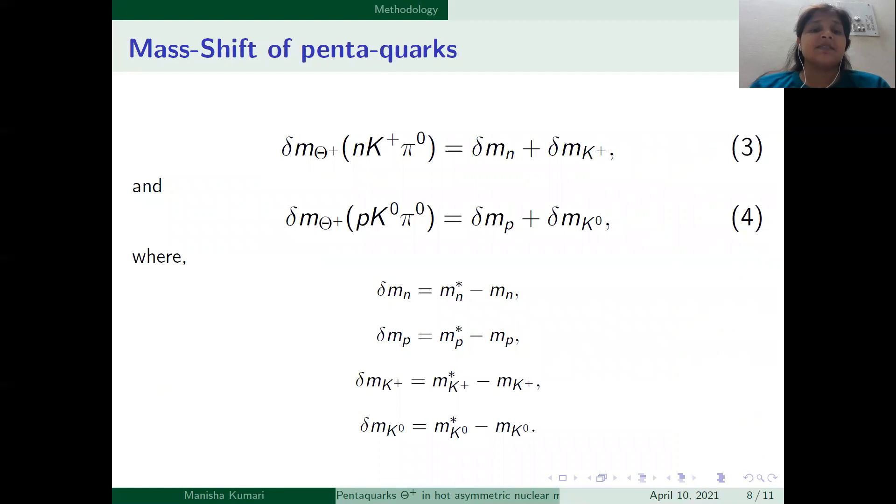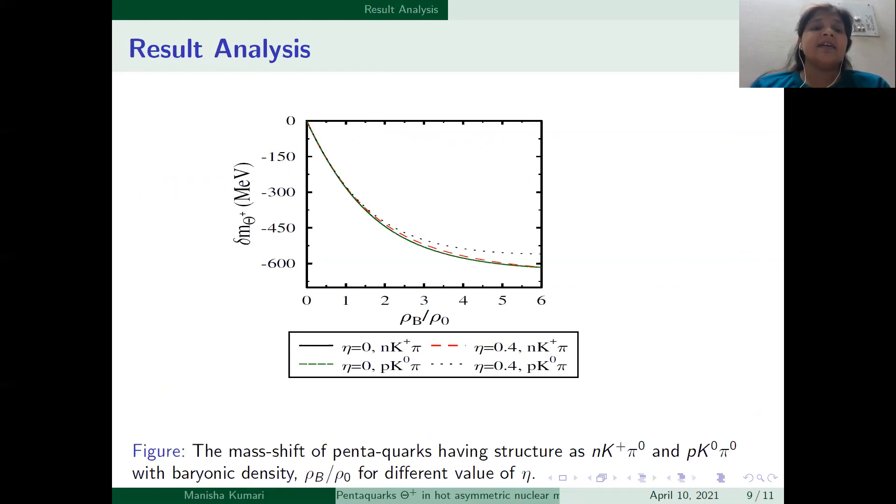Mass shift is defined by these relations. In the result section, we present the mass shift of pentaquarks having structure nK plus pi zero and pK0 pi zero with baryonic density for different values of eta. Eta is an isospin asymmetric parameter.